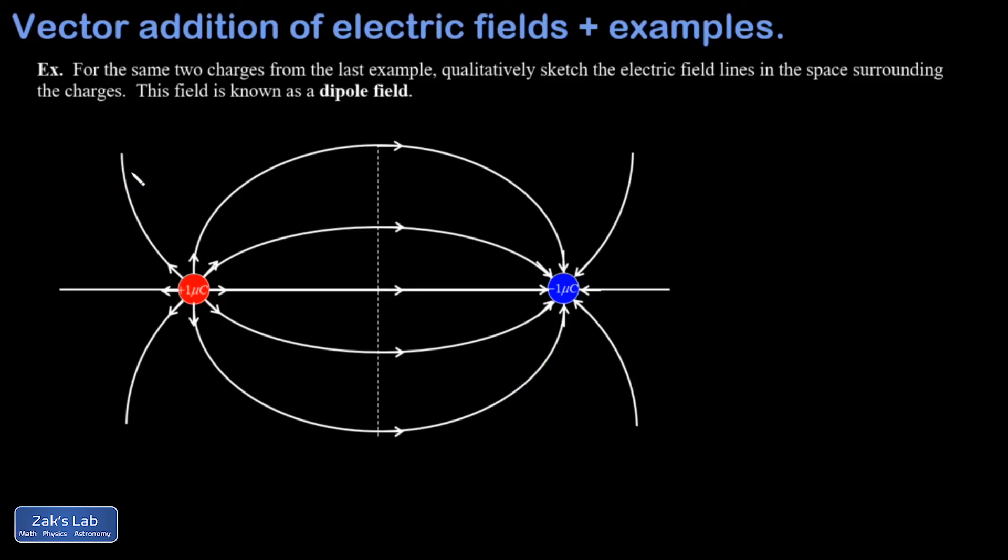So this is a really famous field called a dipole field that you get when you have a positive and negative charge with equal magnitudes. And this is actually the field that you would use to describe like a polarized molecule, for example. So it pops up in a lot of applications.